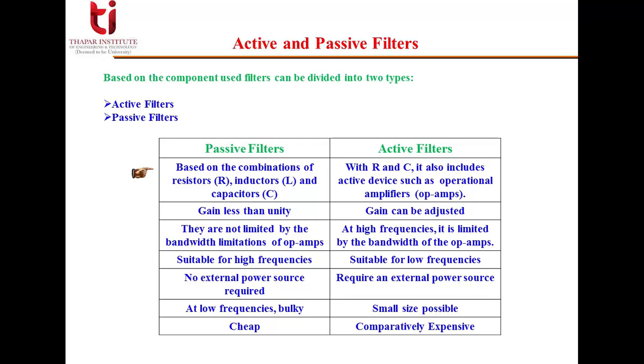Now let's see how one is different from the other. Passive filters are based on the combinations of resistors, inductors, and capacitors, whereas if I talk about active filters, with RLC components it also includes active devices such as operational amplifiers or OPAMPs.